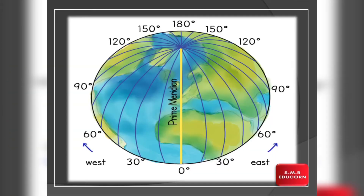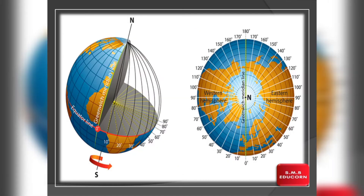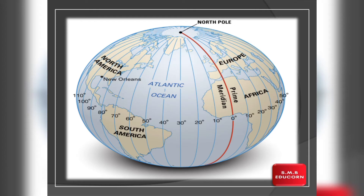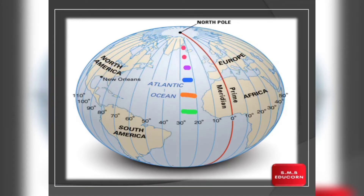Longitudes earth par imaginary vertical lines hoti hai, jo ki north pole se south pole run karti hai, and these longitudes give us an idea about ki earth par koi bhi location kitni east ya phir west par situated hai. These longitudes are also known as meridians. Ab agar hum inki length ki baat kare, toh jitni bhi longitudes hai, sab ki length same hoti hai and there are total 360 longitude lines. Yeh longitudinal lines shape me ek complete circle bilkul bhi nahi hoti, balki yeh semi circle hoti hai. The distance between them decreases steadily poleward until it becomes zero at the poles, where all the meridians meet.